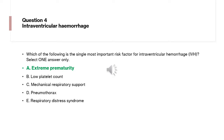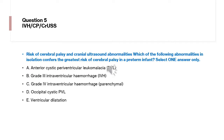Extreme prematurity is also the most important risk factor for necrotizing enterocolitis. Question 5 is about IVH, cerebral palsy (CP), and cranial ultrasound findings. The question asks: which of the following abnormalities in isolation confers the greatest risk of CP in a preterm infant?